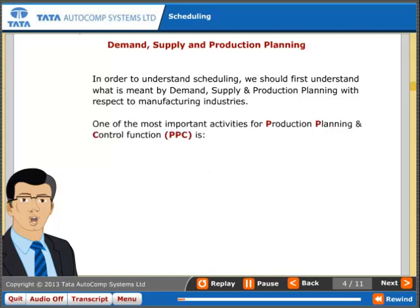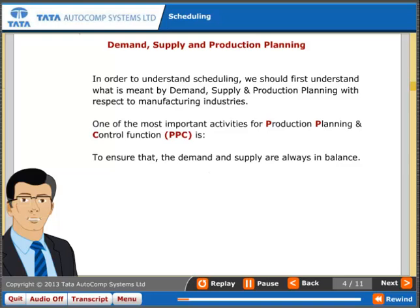One of the most important activities for production planning and control function is to ensure that the demand and supply are always in balance.